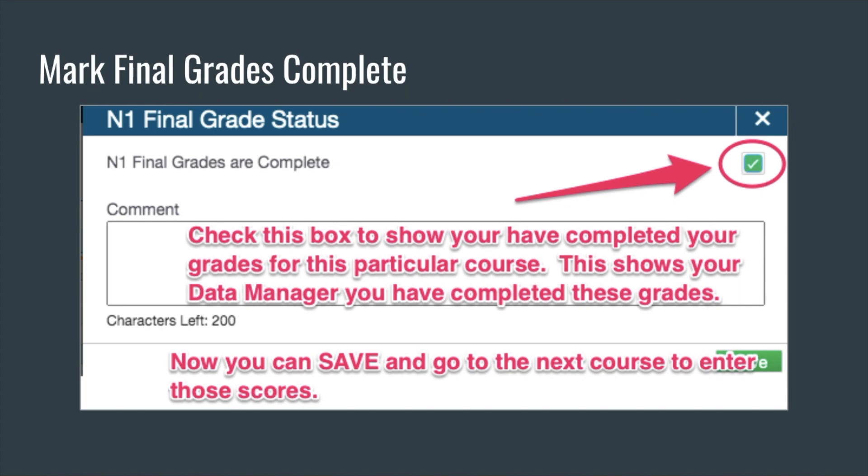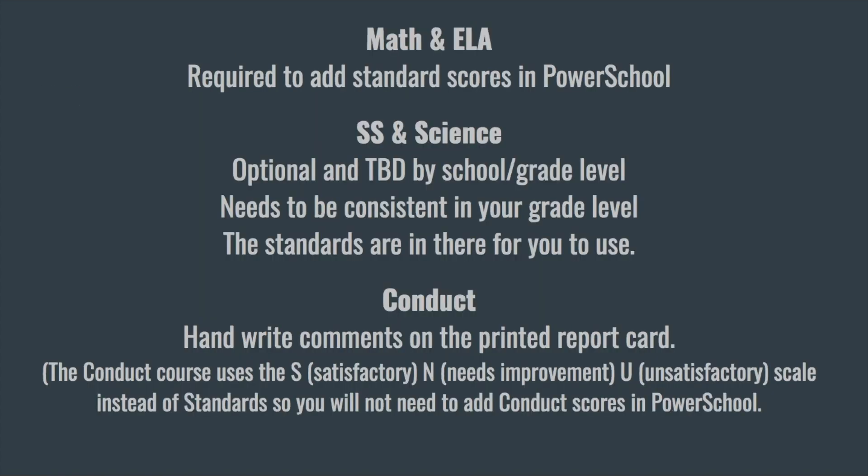Don't forget, do it for every course, not just one. A few reminders: the district has decided that you are only required to add standard scores in PowerSchool for math and ELA. Science and social studies are going to be optional, but it needs to be determined by your school and your grade level, and it needs to be consistent. If one of you decides to give science and social studies standard scores, all of you at your grade level need to do that. The standards are already there for you to choose, just like they were for math.